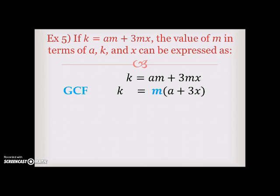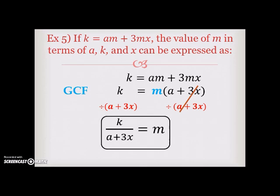Now, since your GCF is being multiplied by the entire quantity, the next step would be to divide both sides by what's inside your parentheses, which in this case is A plus 3x. On the right side, those two expressions will cancel. So now your final equation would be K divided by A plus 3x is equal to M. And that is your final answer.